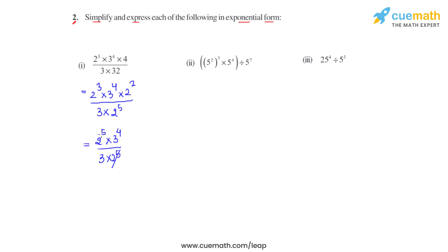Now 2 raised to 5 in the numerator and 2 raised to 5 in the denominator cancel out. We are left with 3 raised to 4 divided by 3. Using the quotient law of exponents, we keep the same base and subtract the powers: 4 minus 1 gives us 3. So the final answer is 3 raised to 3.